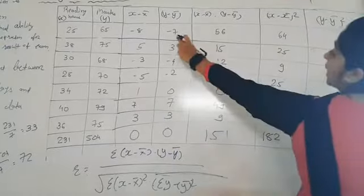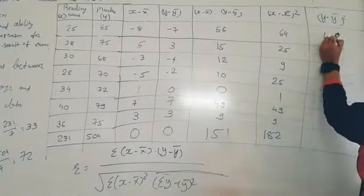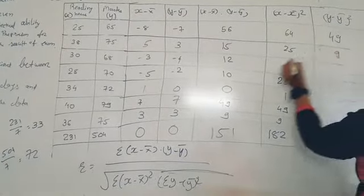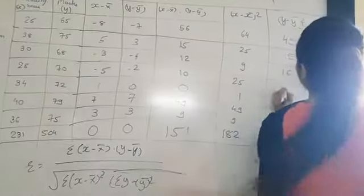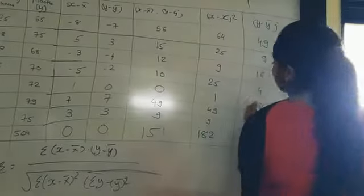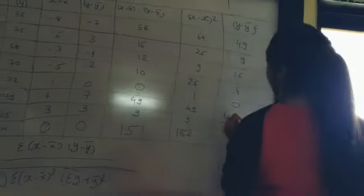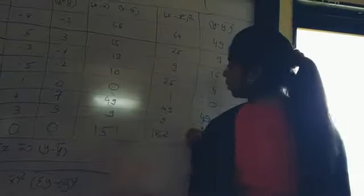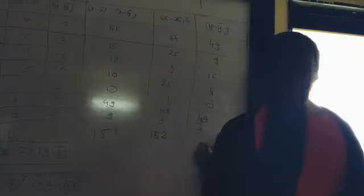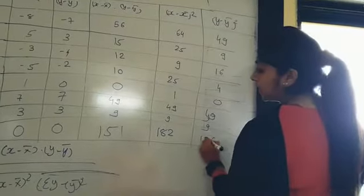So minus 7 square is 49. 3 square is 9. 4 square is 16. 2 square is 4. 0 square is 0. 7 square is 49. 3 square is 9. And here the total number of answer is 136.